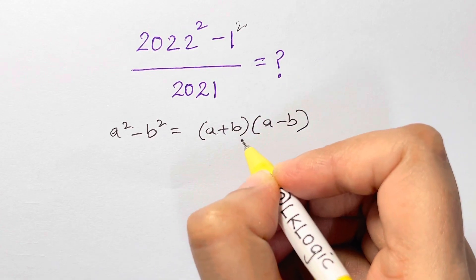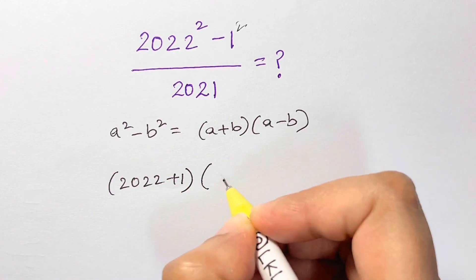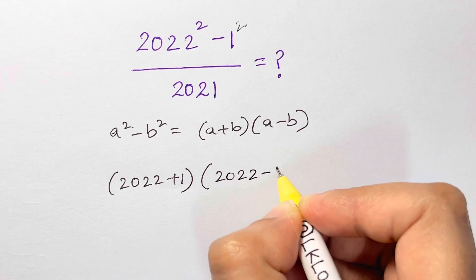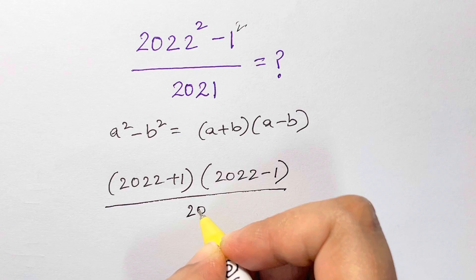Let's substitute it back. So we have 2022 plus 1 times 2022 minus 1 over, we have 2021.